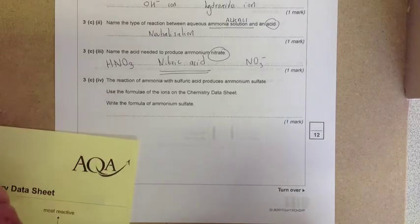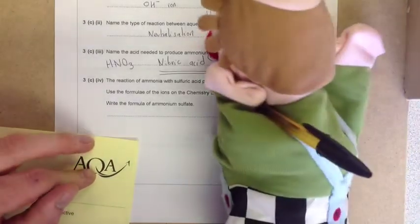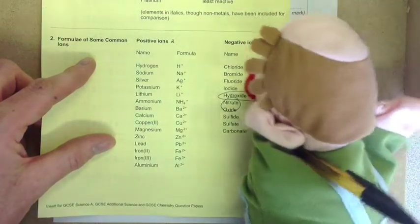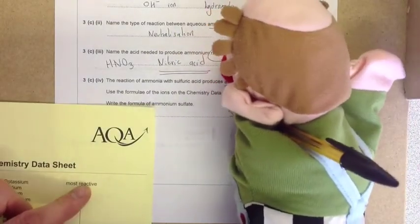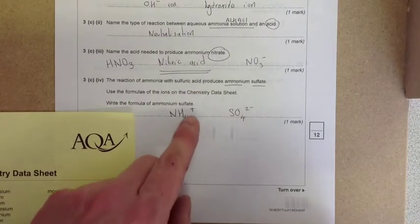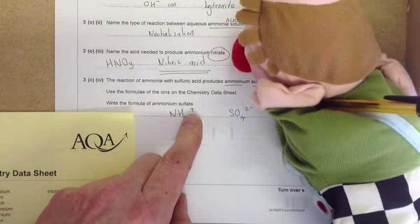The reaction of ammonia with sulfuric acid produces ammonium sulfate. Look at the back of the periodic table - sulfate is SO4 2-. We need to find ammonium, which is NH4+. To cancel these charges out, we've got one plus and two negatives, so we need two lots of this positive ion.